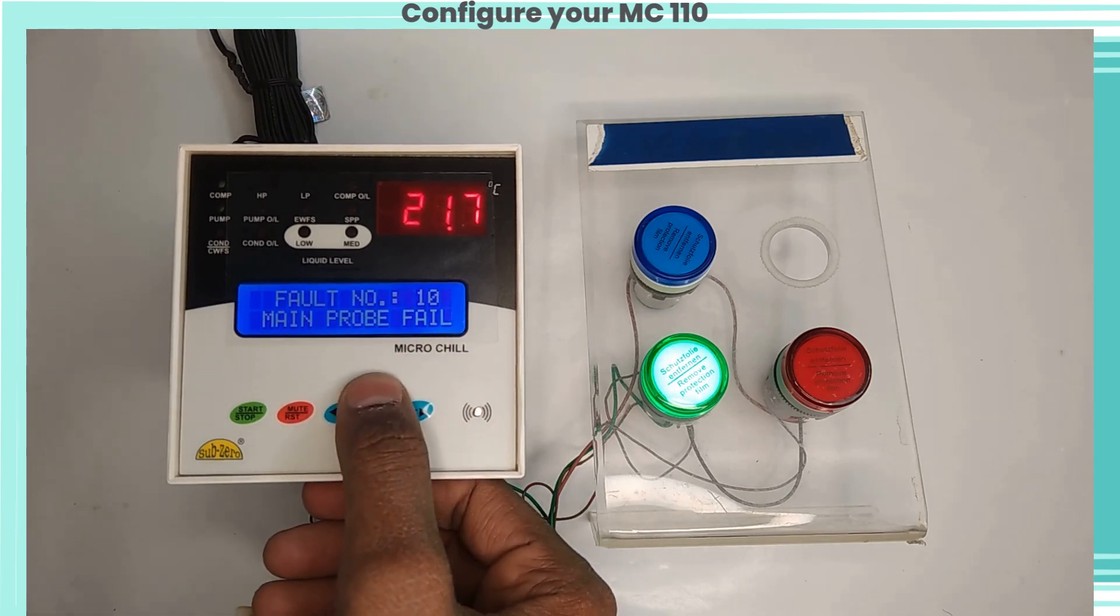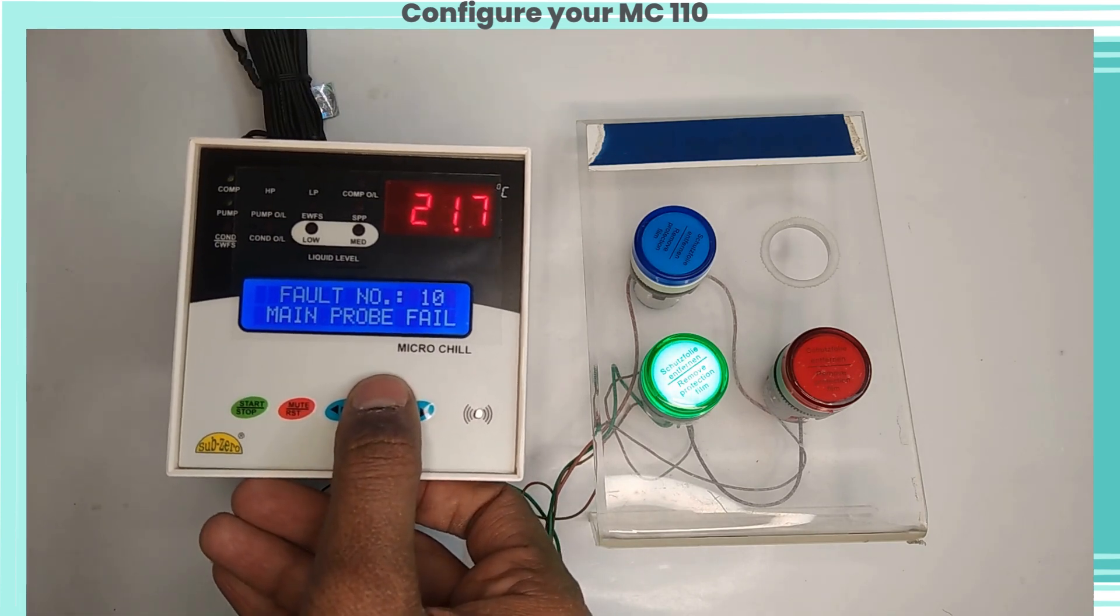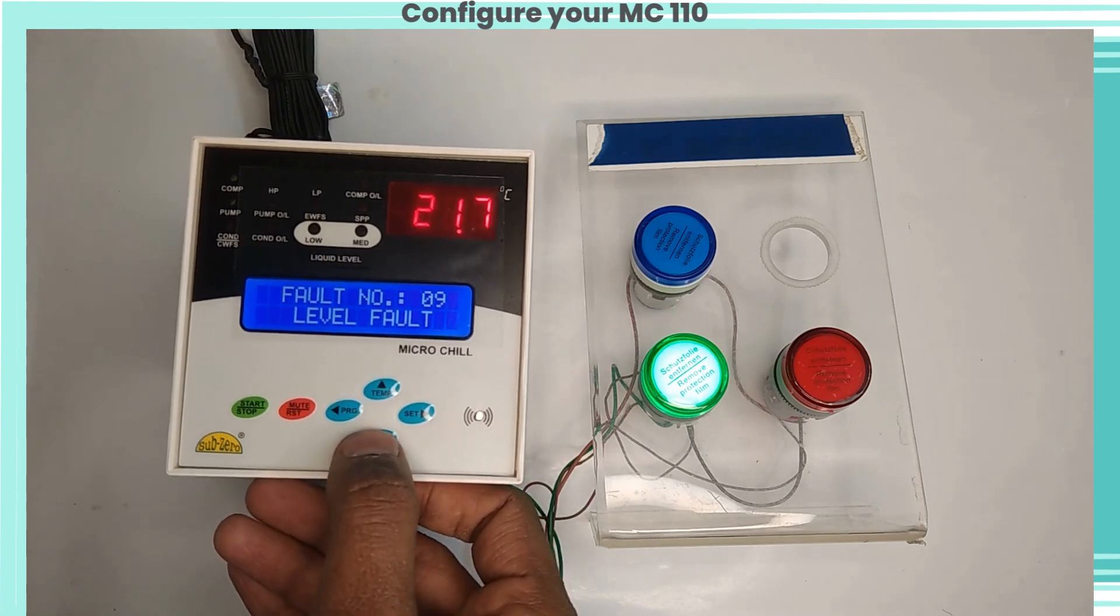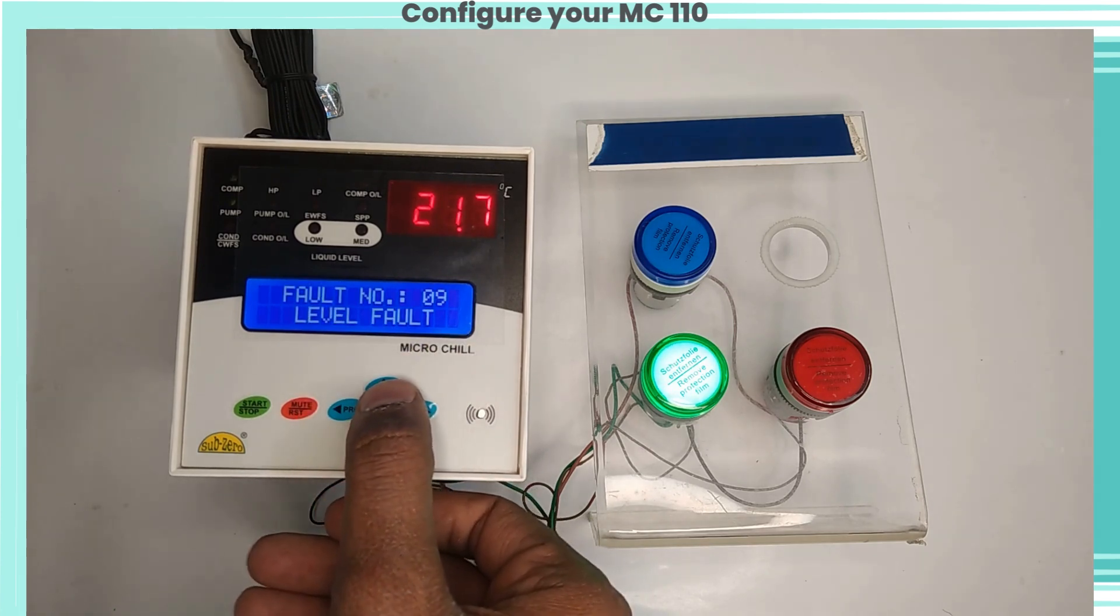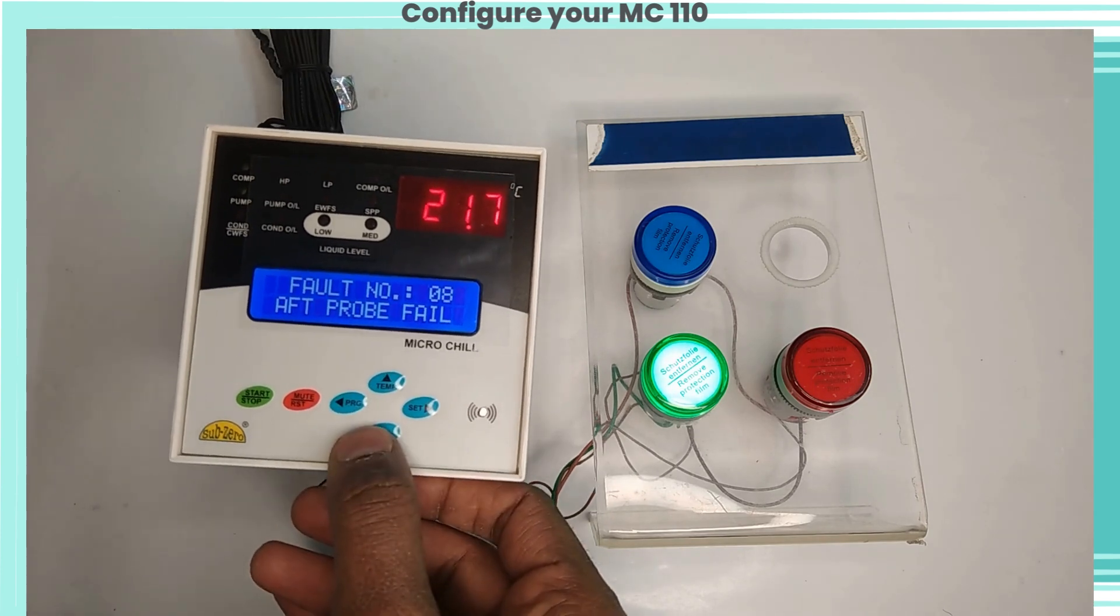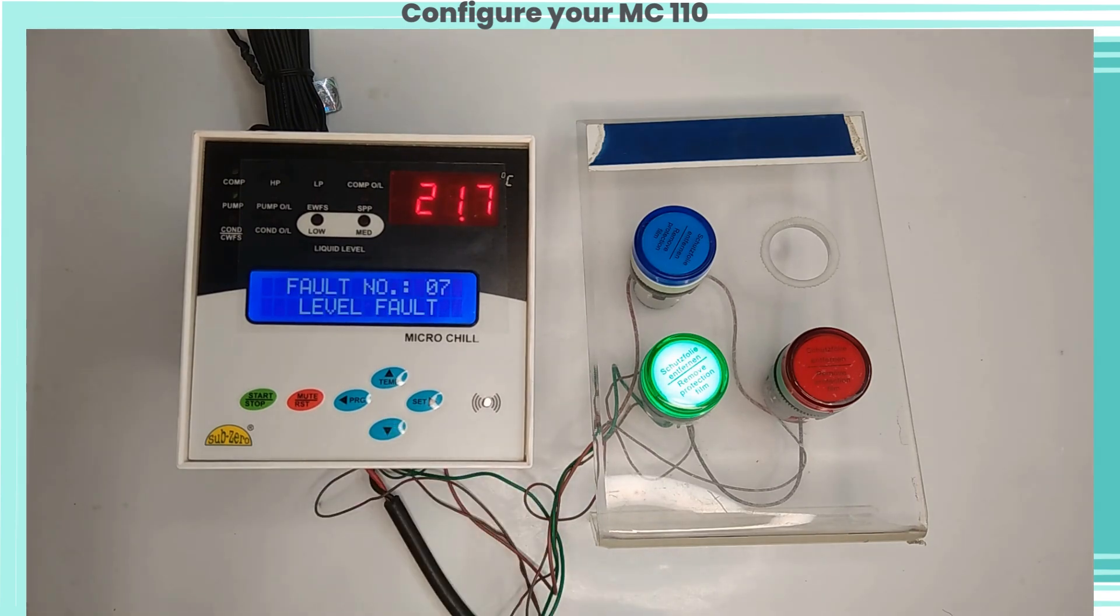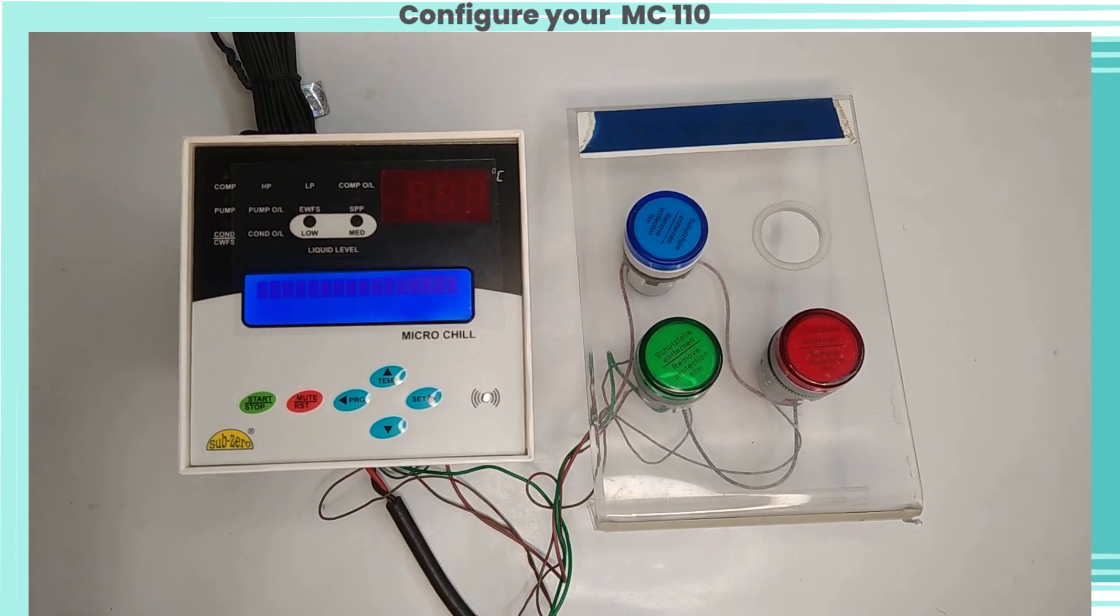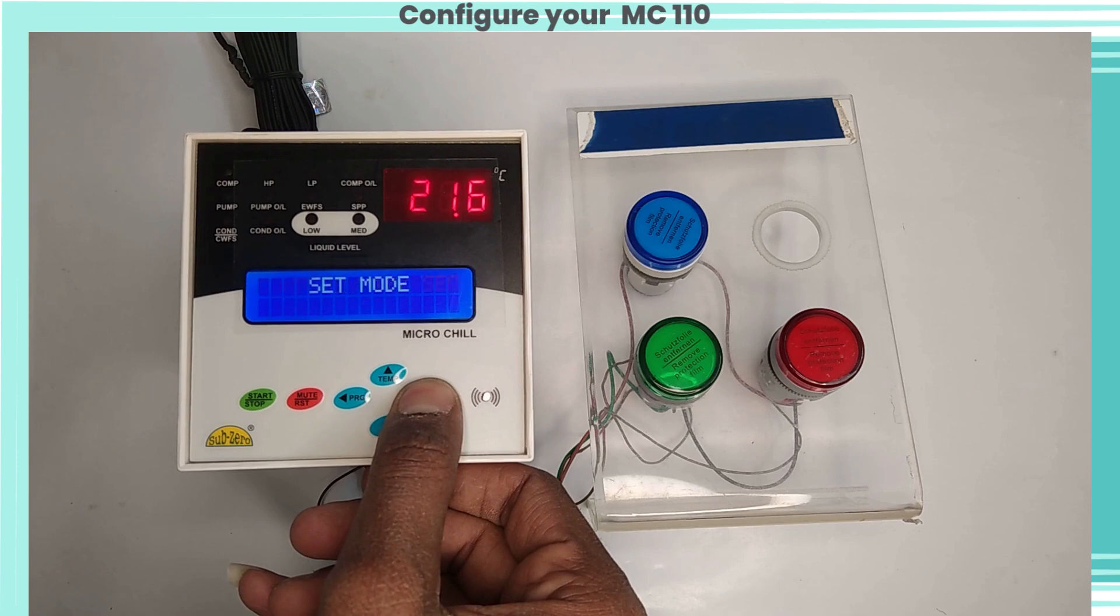If fault number 10 appears, then main probe fail. If fault number 9 appears, then level fault is there. If fault number 8 appears, then AFT probe fail. If fault number 7 appears, then level fault is there. Now let's configure the device and check the fault status. Here we haven't connected any probe for temperature sensor or any level sensor, so we will get different types of fault error logs. Let's check it.